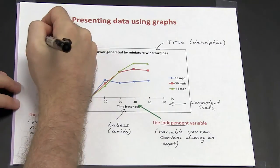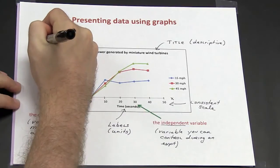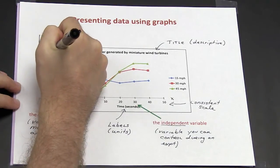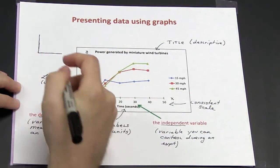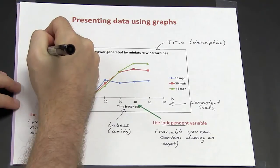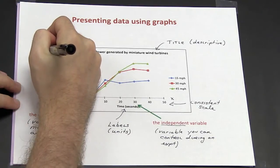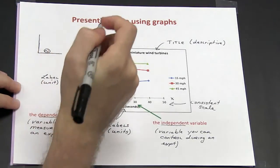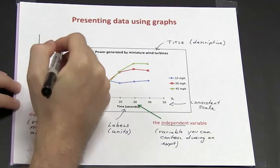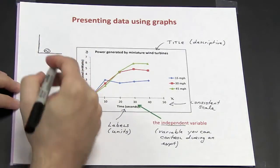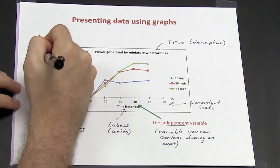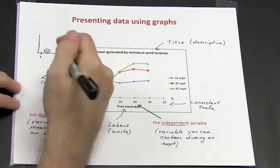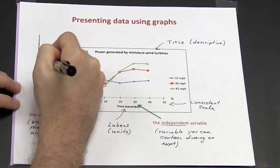It is common if you have a large data set and you want to break your scale, you can do so by adding a little tilde with a circle surrounded. So for example, if my first data point is one second,